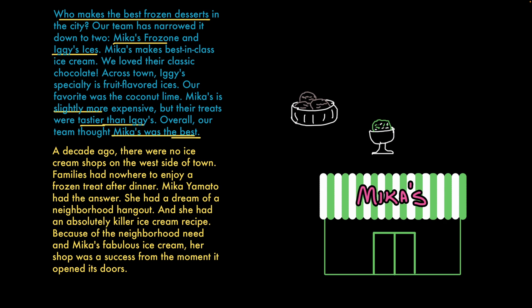So let's look at the second text. Step one again: identify the structure. The first sentence describes a problem — there were no ice cream shops on the west side of town. But is there a solution to the problem? There is: Mika Yamato had the answer. And 'answer' is one of those keywords for problem and solution structure. So that's what this is — a problem and solution structure text. Step two, analyze: the structure emphasizes that Mika has done something valuable and important for the neighborhood. There was a problem; now there's a solution.